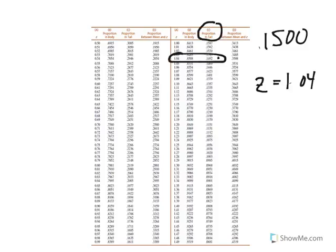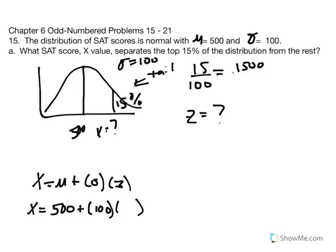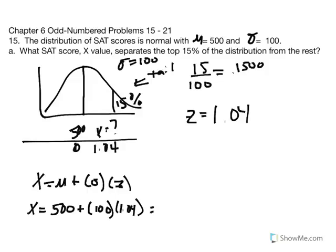Taking that back to our equation: Z is equal to 1.04. We're looking for the score that's 1.04 standard deviation units above the mean. So X equals the mean plus the product of the standard deviation multiplied by the Z score: 500 plus 100 times 1.04, which gives us an X value equal to 604.